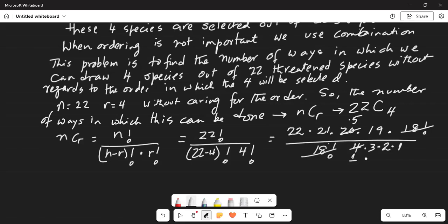and 4 goes into 20 5 times. This is 1 times. 3 goes into 21 7 times and here 1 and 2 goes into 22 11 times.